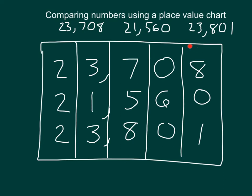Now those numbers are all in the place value chart, making them easier to compare. In the ten thousands place, we're comparing two ten thousands with two ten thousands with two ten thousands. Since they are the same, we go to the next place — the thousands place. We have three thousands, one thousand, and three thousands. The one is the unit with the least value, so twenty-one thousand five hundred sixty will be my smallest number.